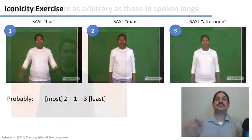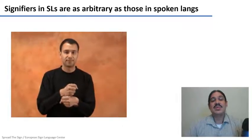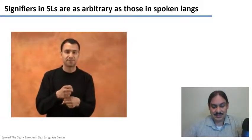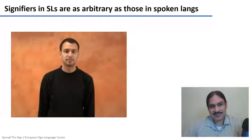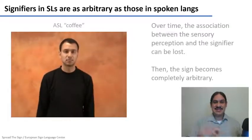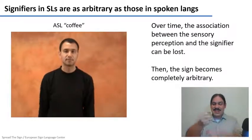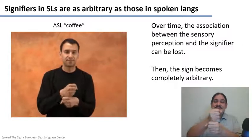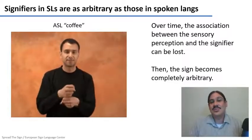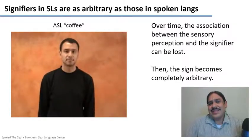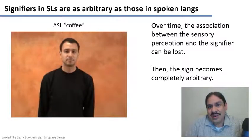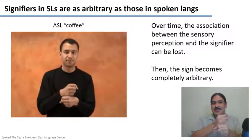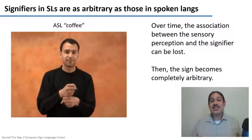Even if a sign has some resemblance to a perception of an object or action, the way it is reinterpreted through the phonology of the sign language makes it ultimately as arbitrary as the phonemes of a spoken word. Here's a final example from ASL — this word means 'coffee,' because it resembles an old-time coffee grinder. You can see that if you were born 50 or 60 years ago, this might have some connection with coffee, but for a younger ASL user today, there's no way this has any connection to how you prepare or drink coffee — it's completely arbitrary.